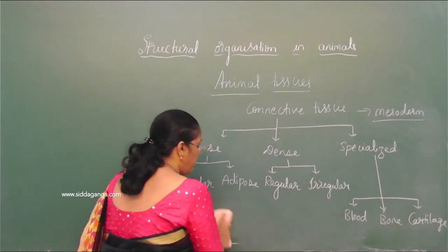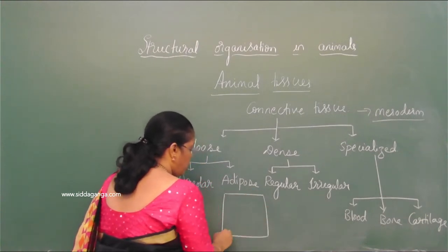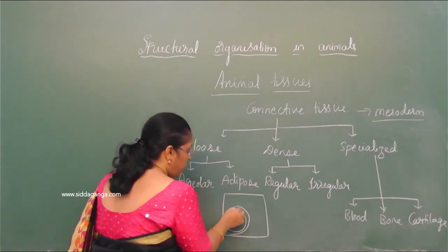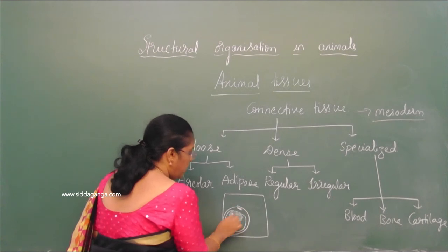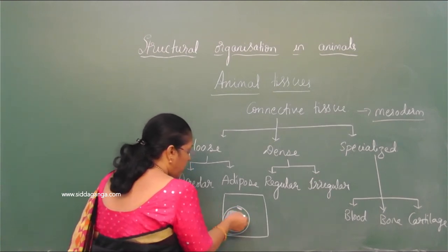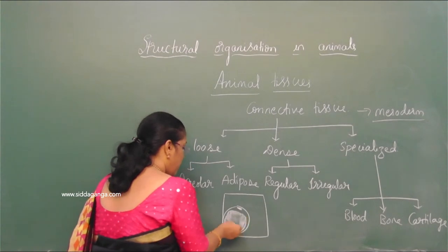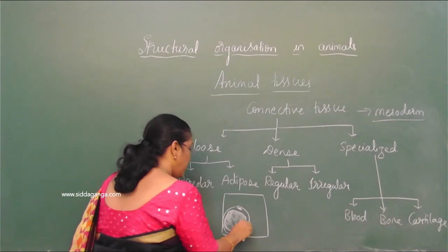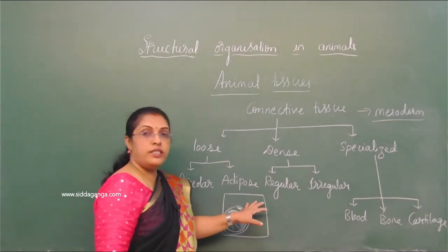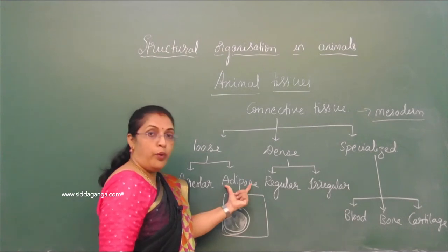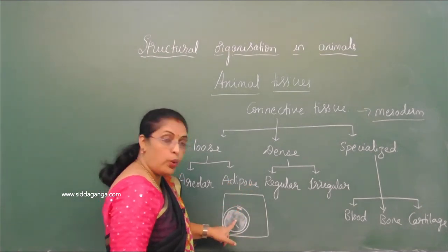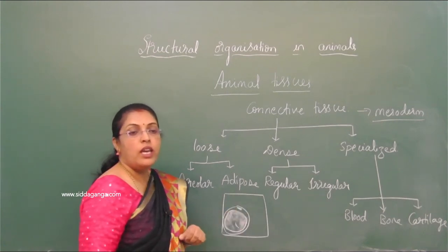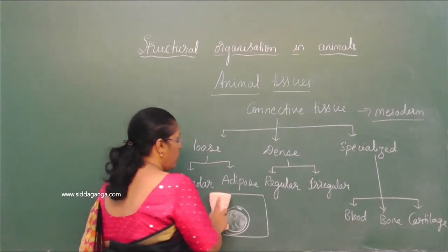Adipose tissue mainly stores fat inside cells. It acts as an insulator beneath the skin and is specialized for the storage of fats.